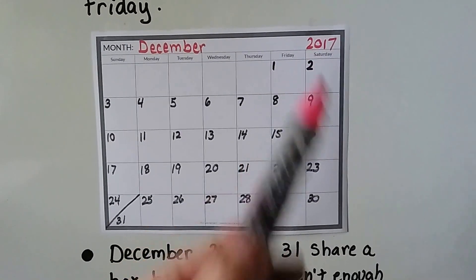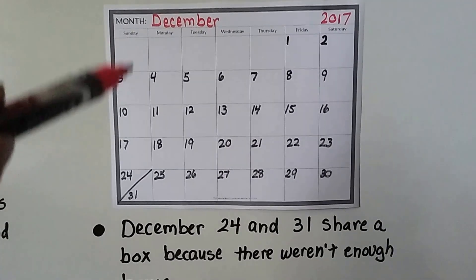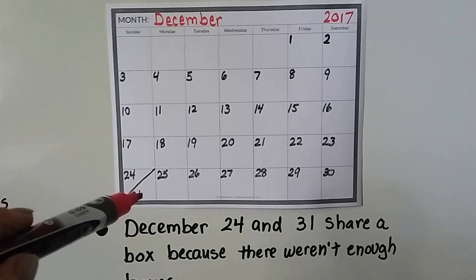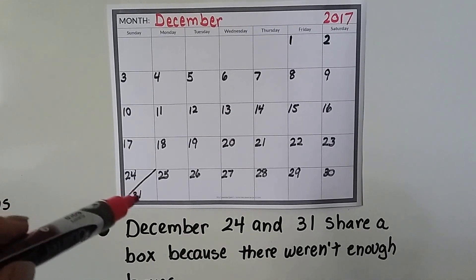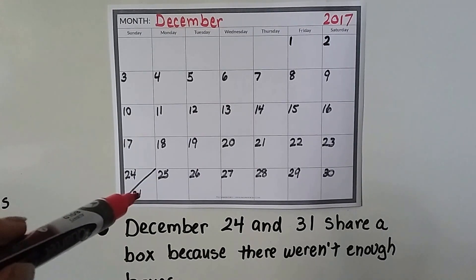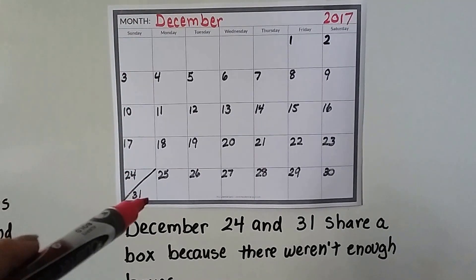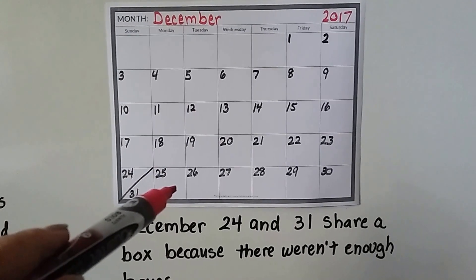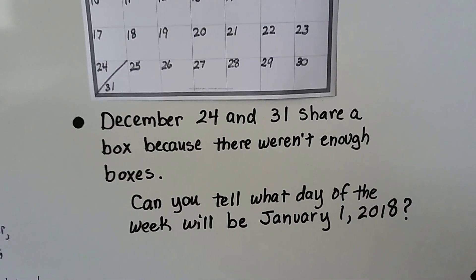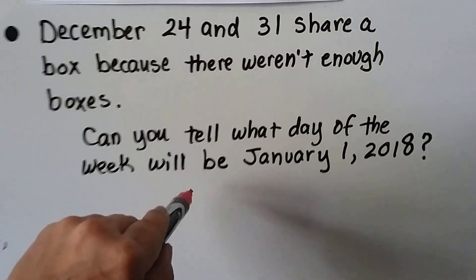Now, this is the calendar for 2017. What would be January 1st of 2018? December 31st is New Year's Eve, and the new year would be the very next day. So if this is a Sunday, the next day would be a Monday. So January 1st would be a Monday — you were right.